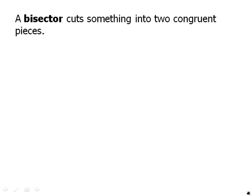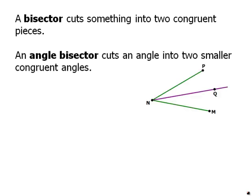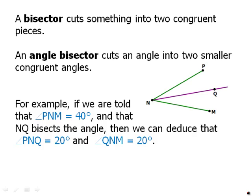A bisector cuts something into two congruent pieces. An angle bisector cuts an angle into two smaller congruent angles. So for example, here we have an angle bisector. If we are told, for example, that the big angle PMN is 40 degrees and that NQ bisects the angle, then we can deduce that the two smaller angles each have to be 20 degrees. They each have to be exactly half, equal to each other because the angle was bisected.